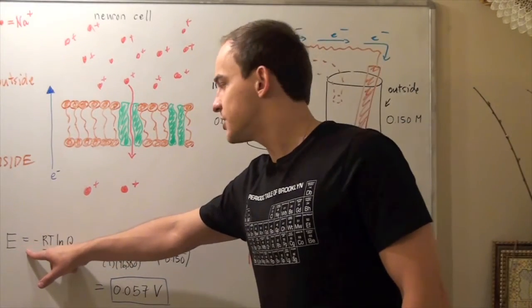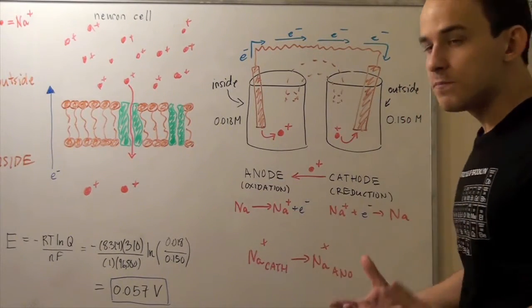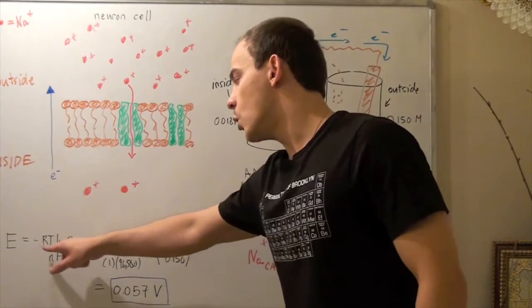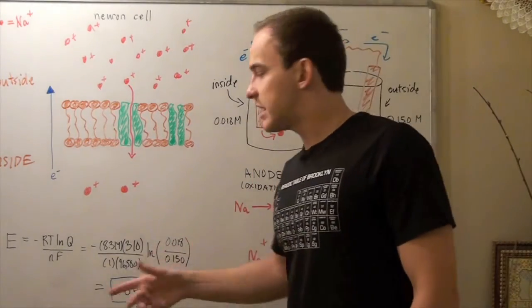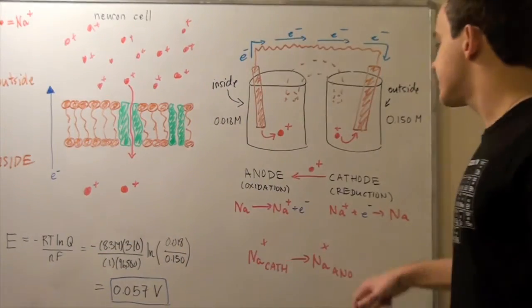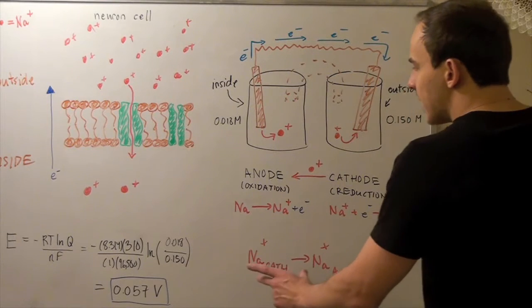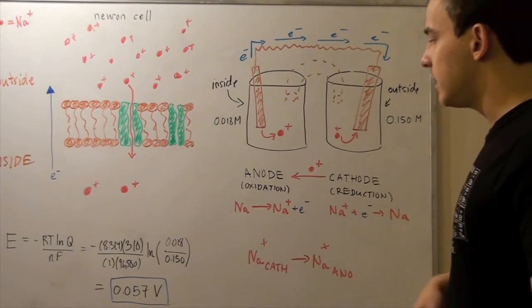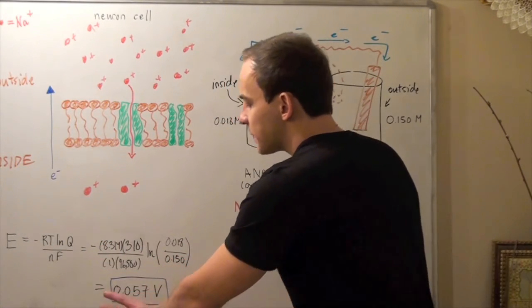Notice that E° for standard conditions cancels out because we have the same type of half-reaction — same magnitude but opposite signs — so they cancel. We are left with: E = −(RT/NF) ln Q. F and R are constants. Since this is a neuron cell, we use body temperature: 37°C = 310 K. N = 1, since we have one mole of electrons transferred. Q = 0.018 M / 0.150 M. Plugging into the calculator, we get a negative number, but there is a negative sign outside, so the negatives cancel, giving our final positive answer.